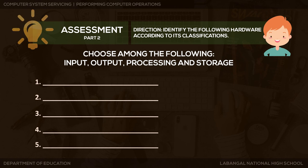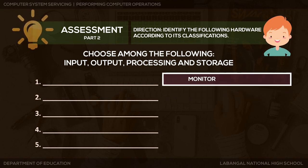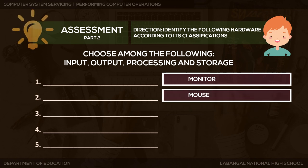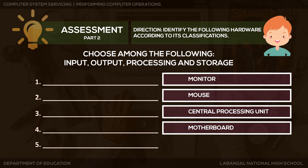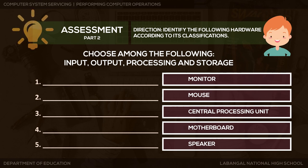Now let's proceed to Part B of our assessment. Direction: Identify the following hardware according to its classification. Choose among: input, output, processing, or storage. First, we have monitor. Second, we have mouse. Third, central processing unit. Fourth, motherboard. And fifth, we have speaker. You can pause this video if you still need more time finalizing your answers.